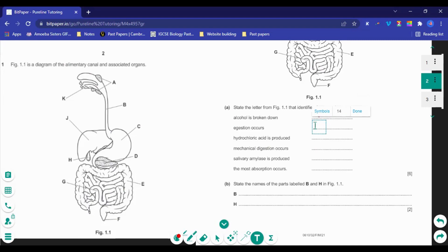Where does egestion occur? Egestion, getting rid of all of the undigested material, this happens at the anus. Hydrochloric acid is produced. Hydrochloric acid is produced in the stomach which is C.